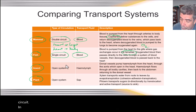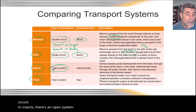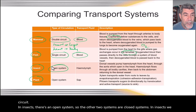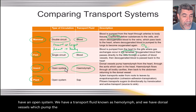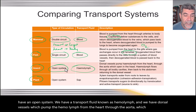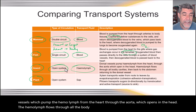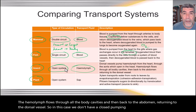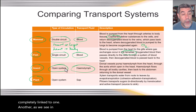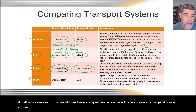In insects, there's an open system — the other two systems are closed. The transport fluid is known as hemolymph, and dorsal vessels pump the hemolymph from the heart through the aorta, which opens in the head. The hemolymph flows through all the body cavities and then back to the abdomen, returning to the dorsal vessel. So unlike mammals, we don't have a closed pumping system with tubes all completely linked; instead there's drainage of fluid into the surrounding tissues.